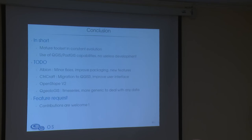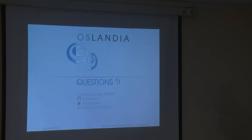To conclude, this is a mature toolset and new features are already planned for Albion, Controlcraft, and OpenStopy — second versions are in the pipeline. For the QGIS plugin we have already added time series support — displaying data over time — and we want to make it more generic to handle any type and format of data. If you have ideas for future features, contributions are welcome.